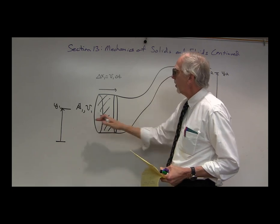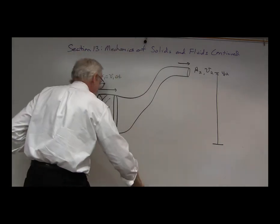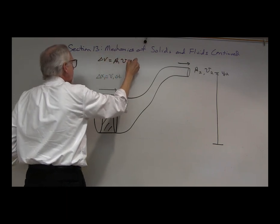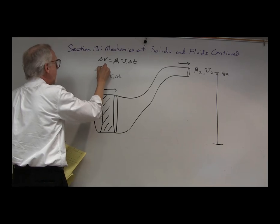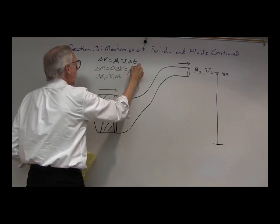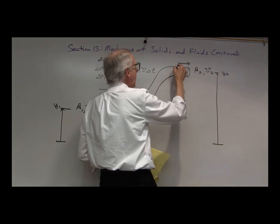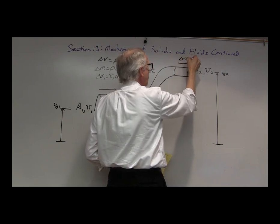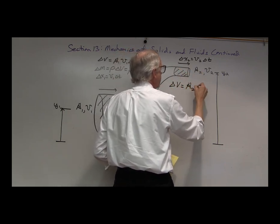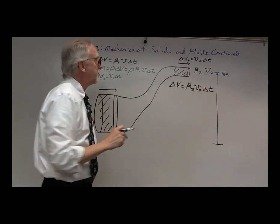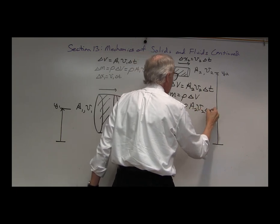This volume is then a1 v1 delta t, so delta volume equals a1 v1 delta t. The mass here will be the density times the volume, so mass equals rho times a1 v1 delta t. Over here, how much flows out: we have some distance delta x2, which is v2 delta t. The volume will be delta v equals a2 times v2 delta t. The mass coming out, delta m, will be rho delta v, which is rho a2 v2 delta t.